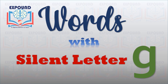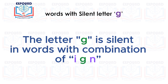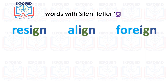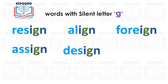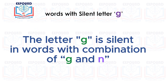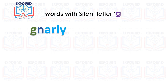Silent G. Rule 1: The letter G is silent in words with the combination I-G-N: resign, align, foreign, assign, design, sign, campaign. Rule 2: The letter G is silent in words with the combination G-N.